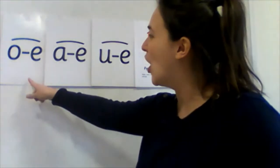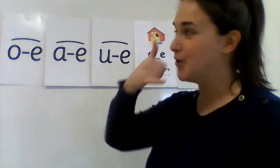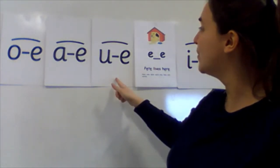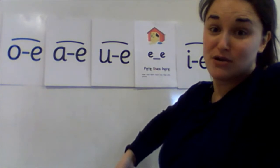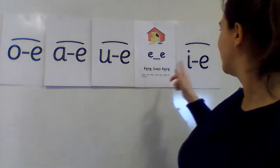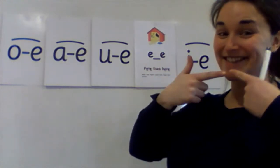We have O-E phone home, A-E make a cake, U-E huge brute, E-E Pete lives here, I-E nice smile.